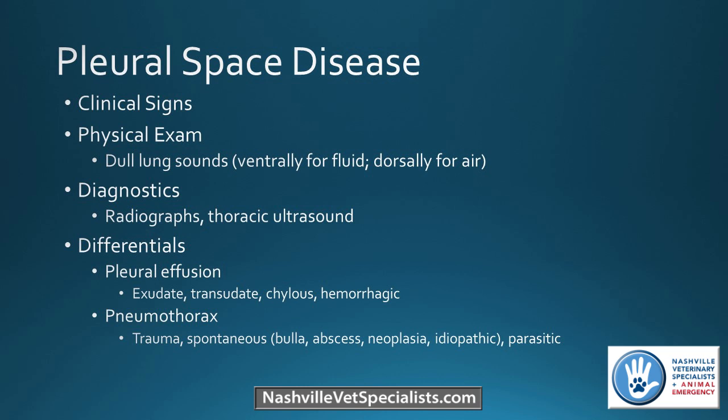Differentials for pleural effusion include exudate like pyothorax, transudate like heart failure, chylous effusion, or hemorrhagic effusion from trauma. For pneumothorax, the most common cause is blunt force trauma like being hit by a car. You can also have a spontaneous pneumothorax — we see that a lot in huskies. We've also seen a case from heartworm disease cause a spontaneous pneumothorax.